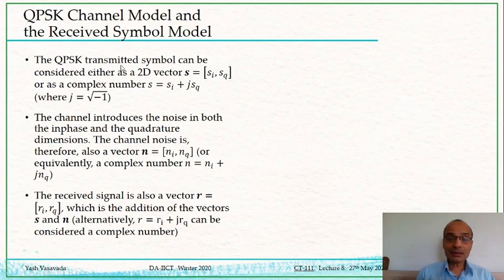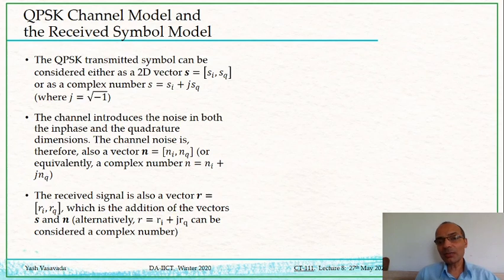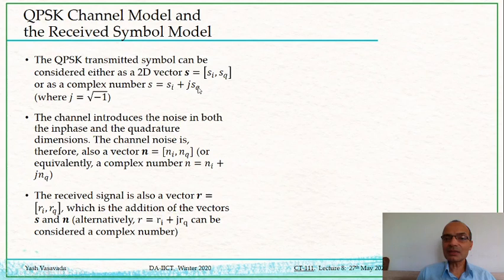The QPSK symbol can be thought of in two equivalent ways: either as a two-dimensional vector (SI, SQ) where SI and SQ are voltages, or — because the 2D IQ plane bears a close relation to the complex number plane — as a complex number SI + j·SQ. These are two equivalent ways of looking at QPSK transmission.